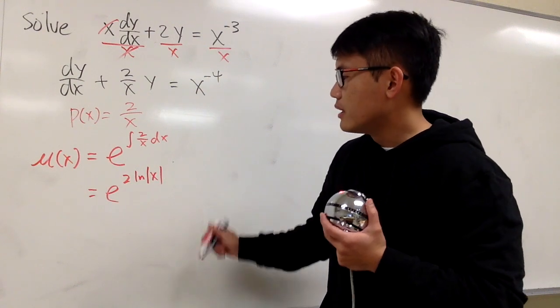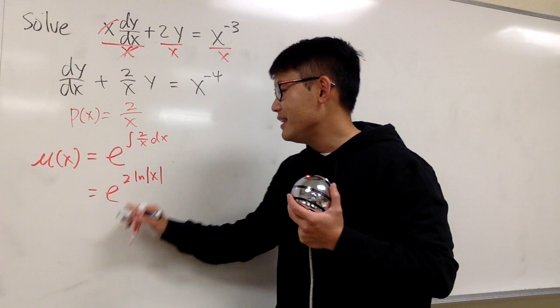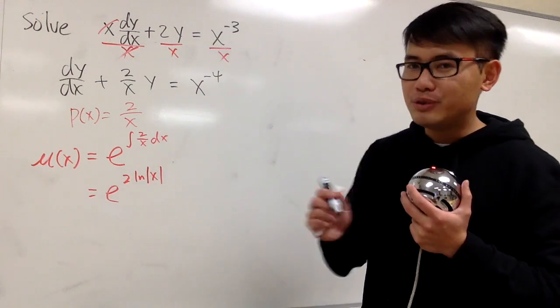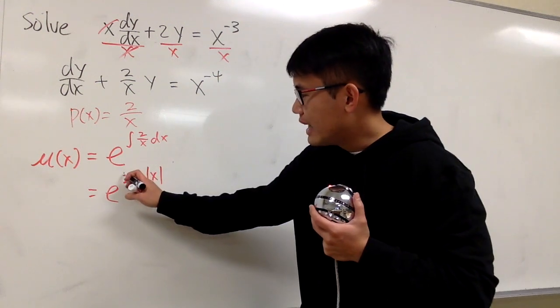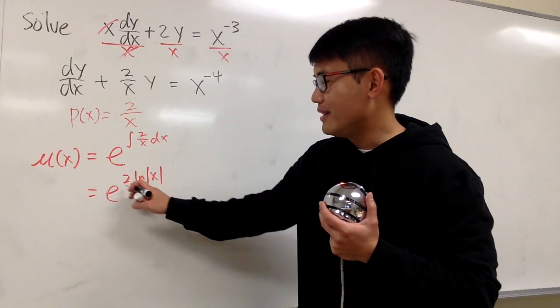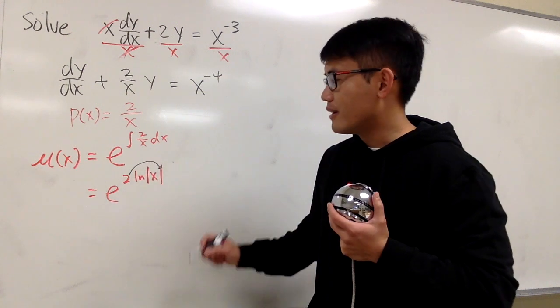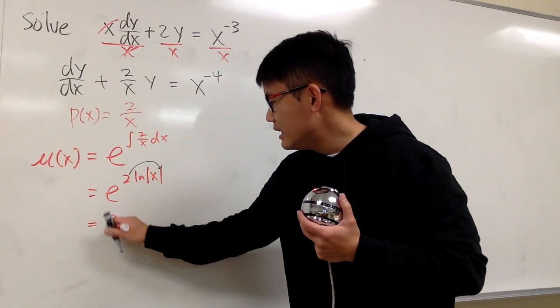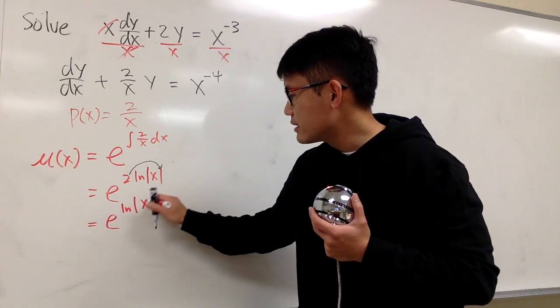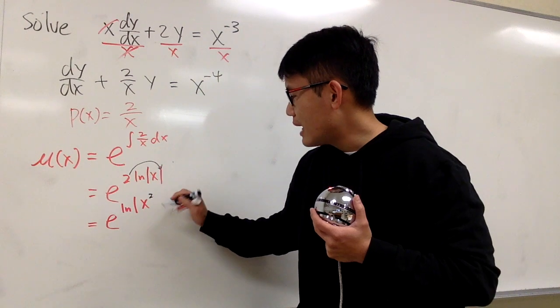Don't worry about the plus c. This is what we need. And we can somehow get rid of the e and the ln, right? Be sure you do it carefully. You cannot have a number besides 1 in front. So put the 2 to the exponent here. So this is e raised to the ln absolute value of x to the 2nd power.